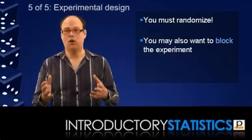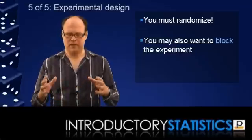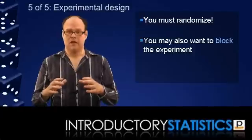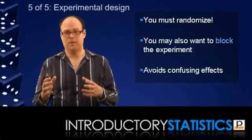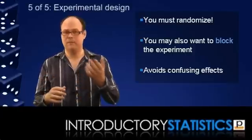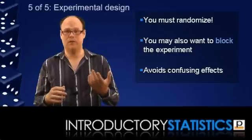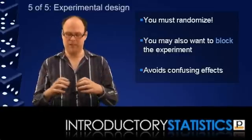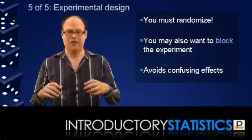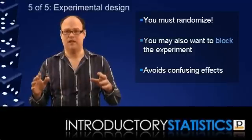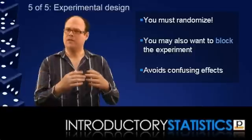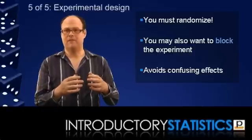Secondly, it can be appropriate to block experiments. That's when you think that there are different demographics in the population and in the group of experimental subjects that you think might affect the results of the experiment. So say you think that men and women might naturally have different blood pressures. Well when testing the effect of caffeine on blood pressure, you might want to split men and women up and then run separate experiments on the two genders. That way the effect of gender on blood pressure won't get mixed up with testing the effect of caffeine on blood pressure.